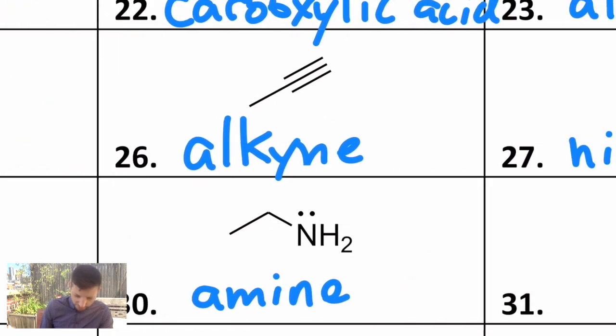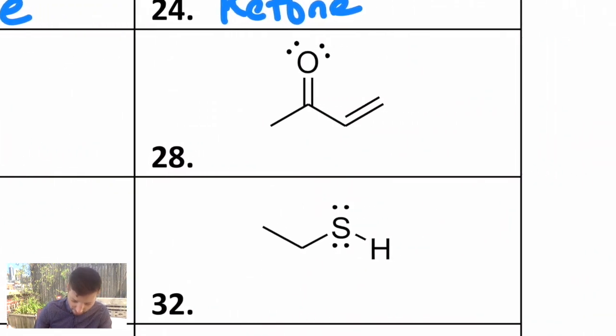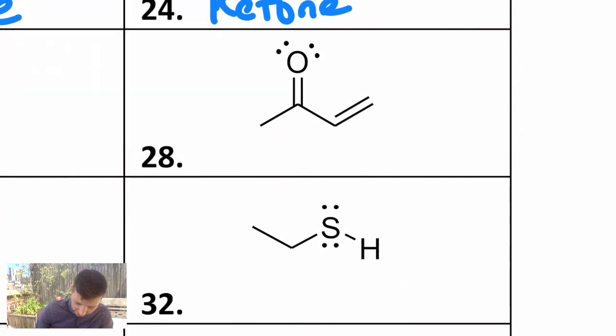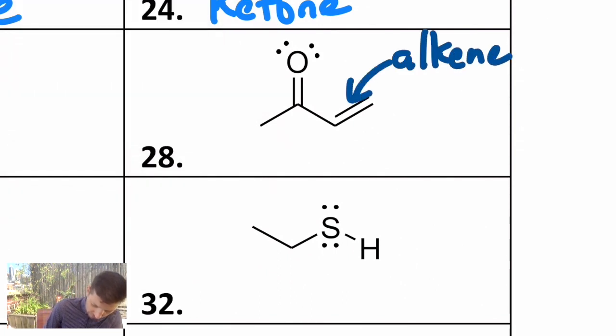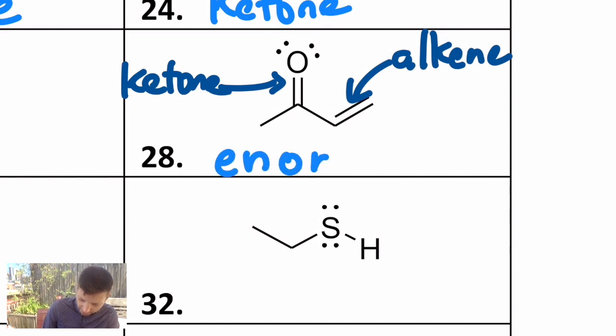Then we get to twenty-eight. Twenty-eight is another combo with an alkene. We have an alkene and a ketone. We learned how to make these with aldol condensations in Orgo 2. This is called an enone. Alkene hybridized with ketone so enone.